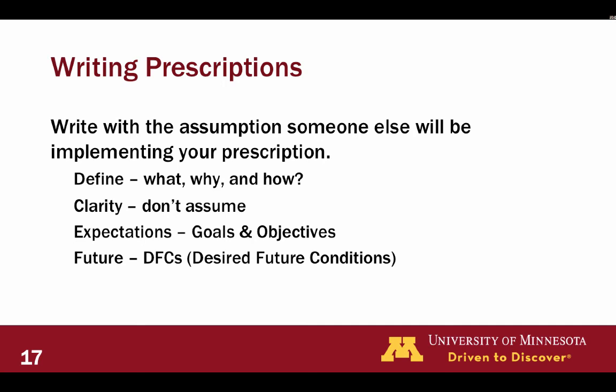Now we're finally into writing the prescription. Write with the assumption that someone else will be implementing it. Be sure to define what, why, and how — what are you doing, why are you doing it (relating to your goals and objectives), and how do you want to do it? Clarity is key — don't assume. Be especially clear with your terminology; use silvicultural dictionaries and standard terms, because those provide meaning and clarity. State your expectations in relation to your goals and objectives, and articulate your desired future conditions.